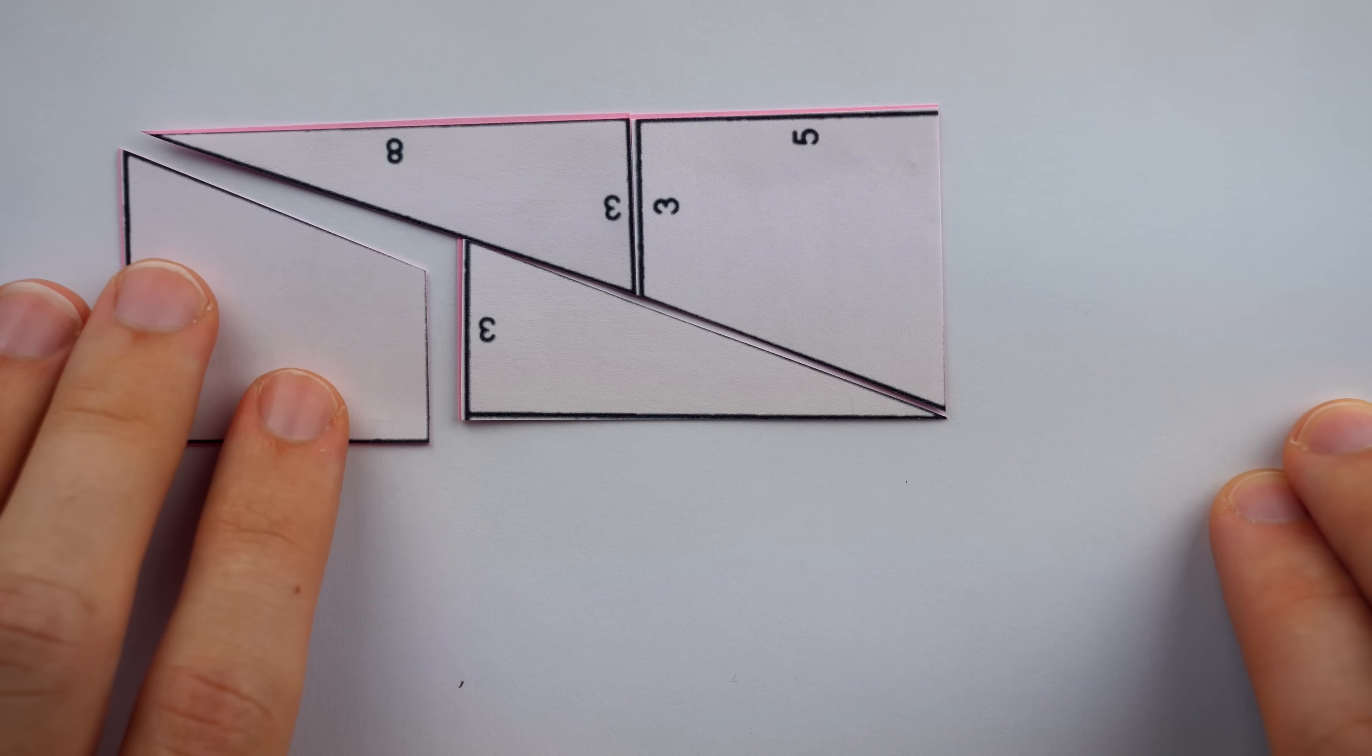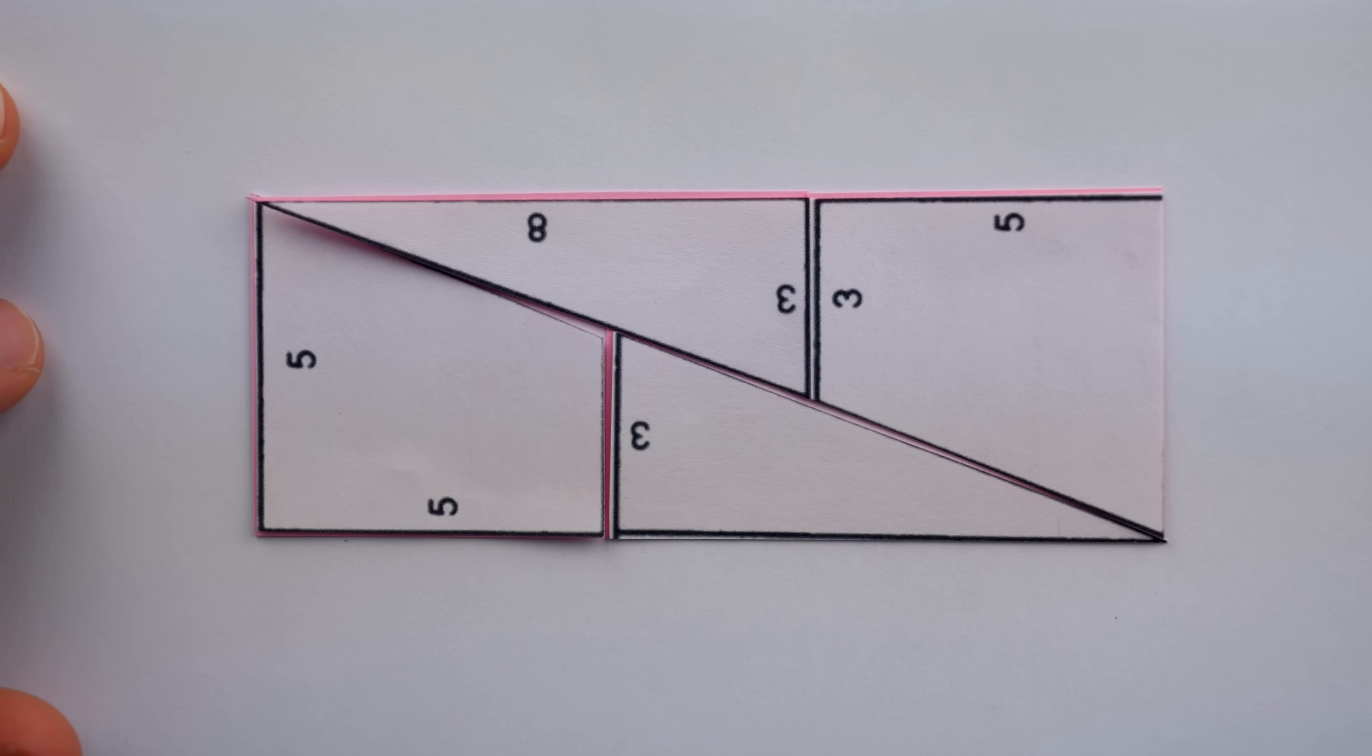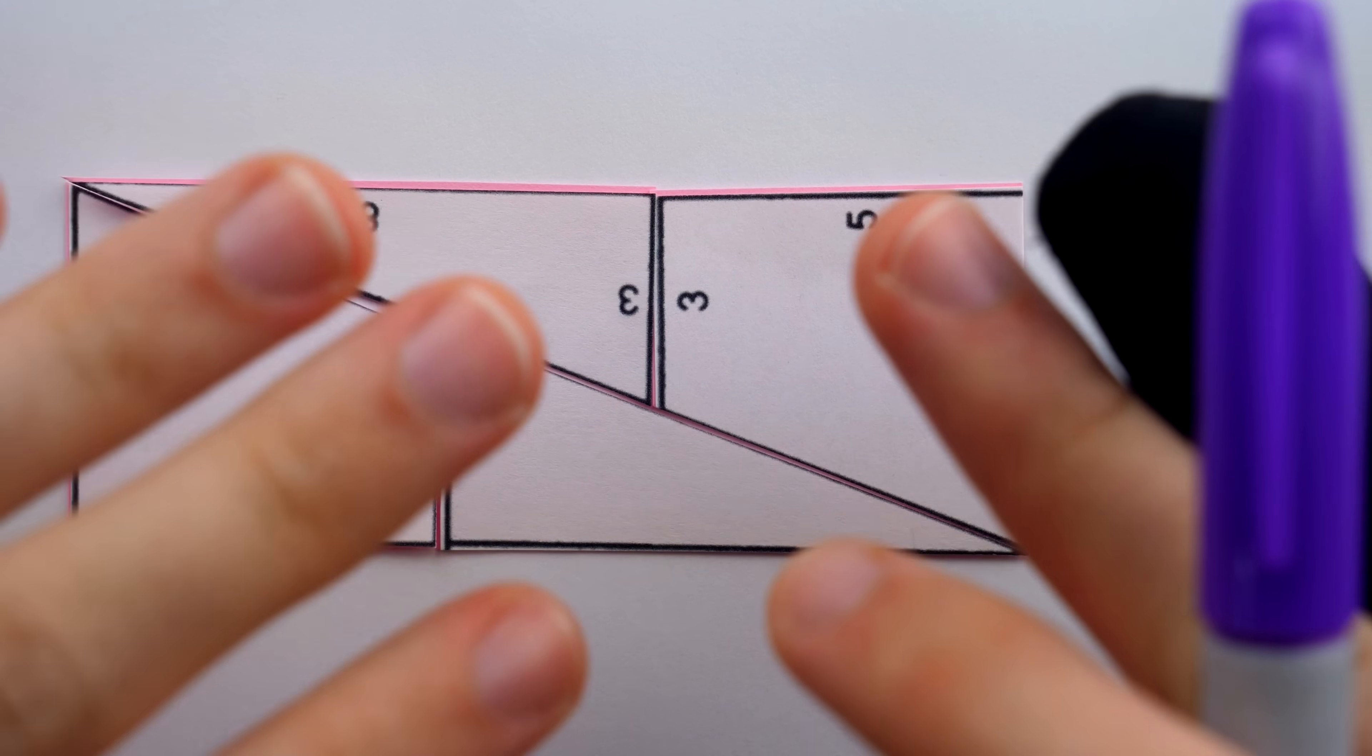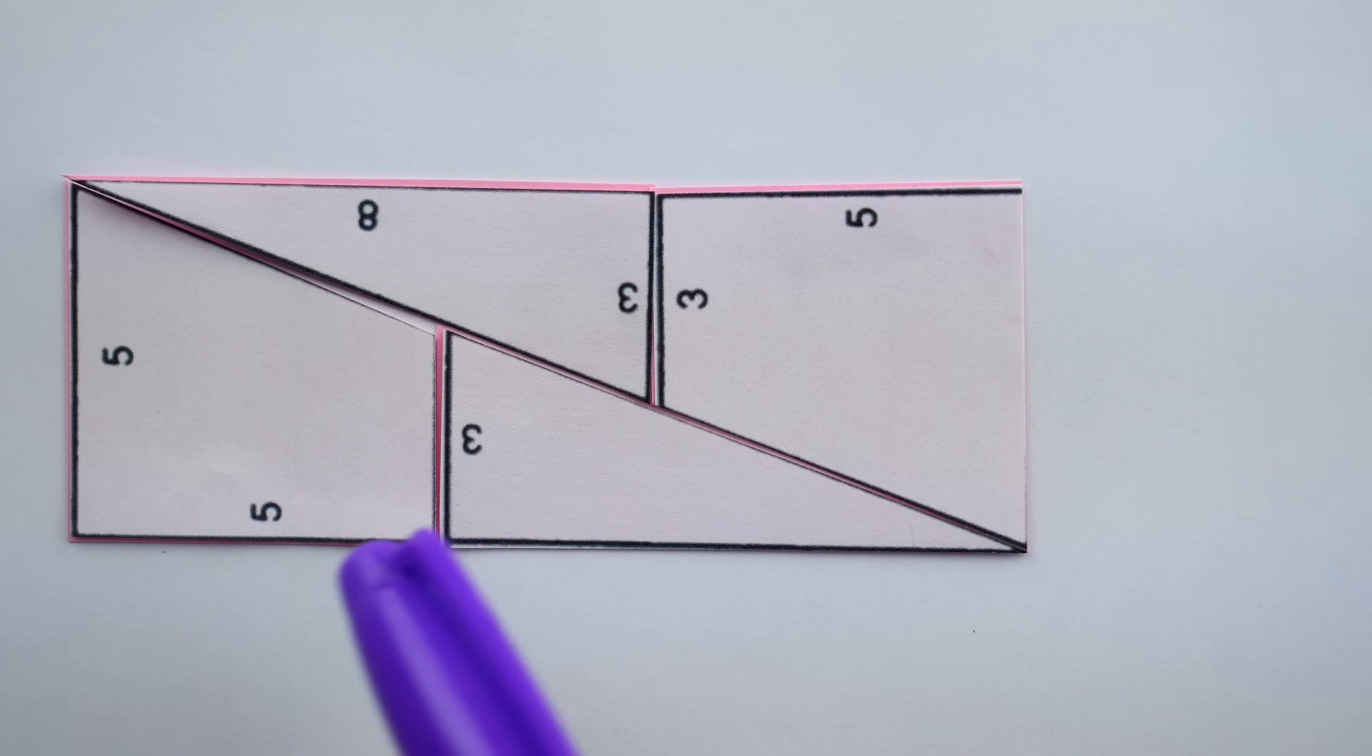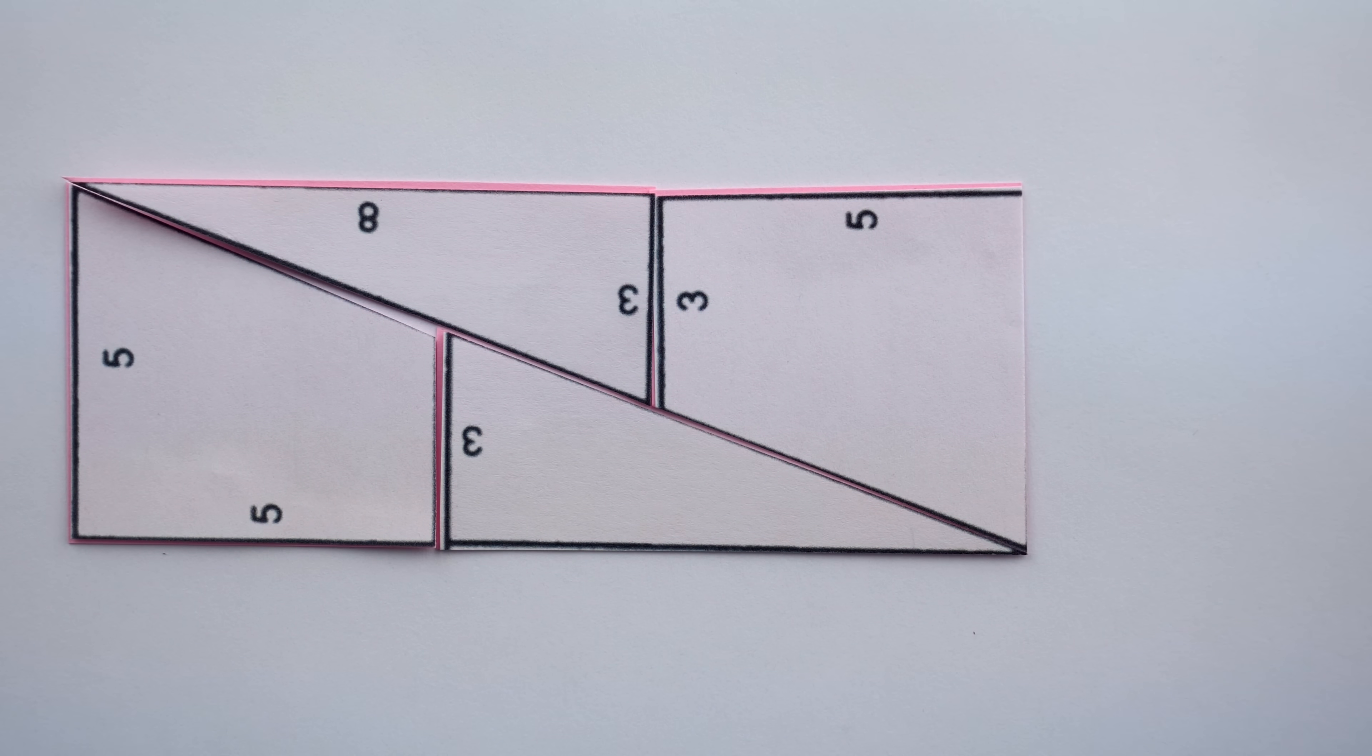But here is where we get into a little bit of trickery. Uh-oh. As you can see, I have just rearranged the pieces of our square into a beautiful rectangle. Now, let's just make sure we haven't dismembered reality like a hog at a butcher shop and check what the area of this rectangle is. Obviously, it's going to be 64 square units, but let's just do the math.